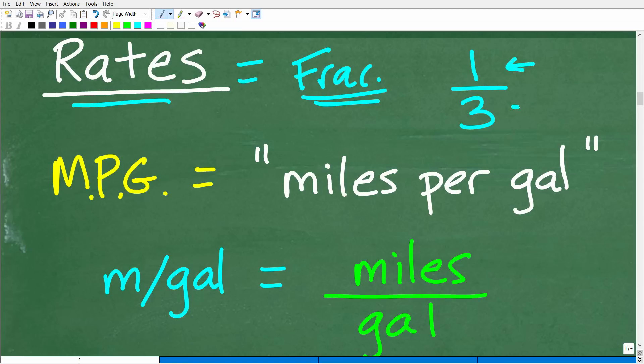So something like one-third. But here's the deal, okay? It's a type of fraction where we're comparing two different units of measure, okay? In other words, the numerator and denominator have nothing to do with one another.